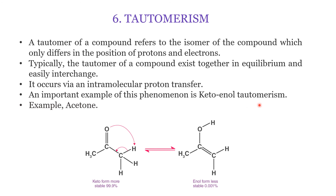In keto-enol tautomerism, considering acetone as the example, acetone is more stable in keto form — it is available at 99.9%. The enol form is very much less stable and available at very low concentration in solution. With this, we have completed the types of structural isomerism. Thanks for watching. Please do comment if you have doubts. Thank you.